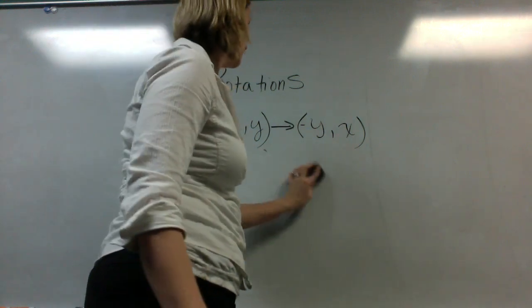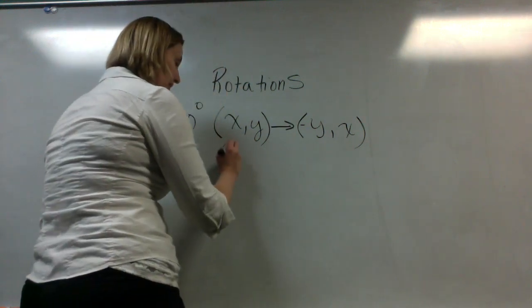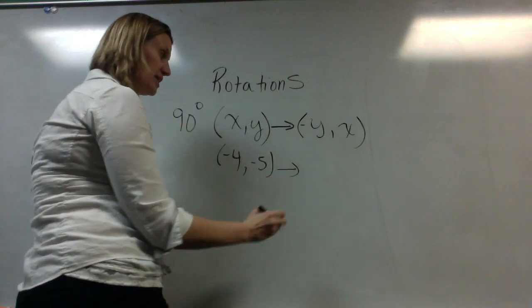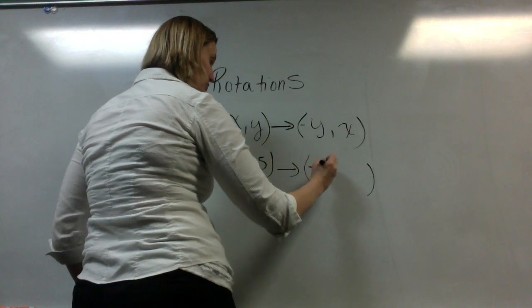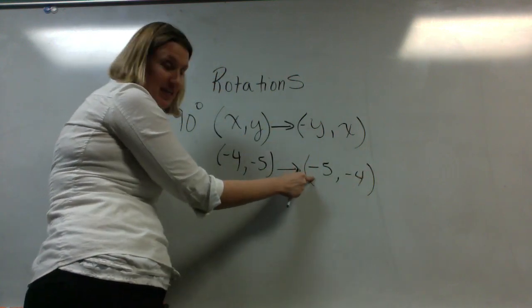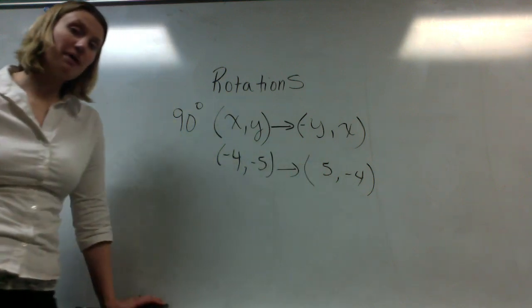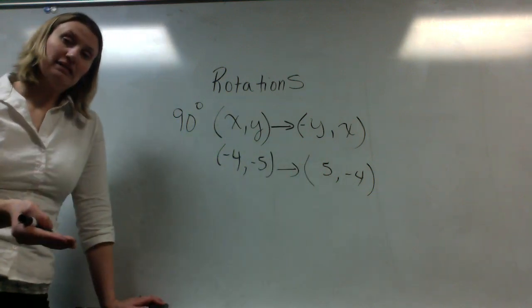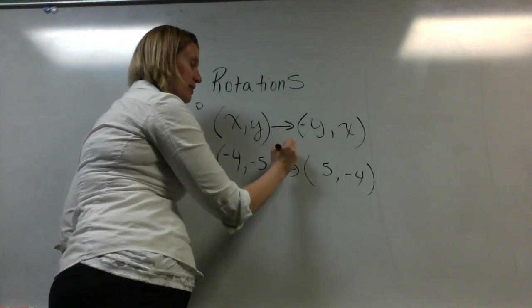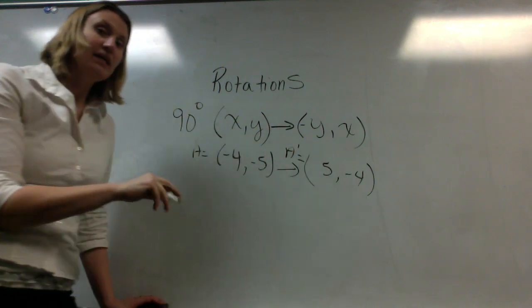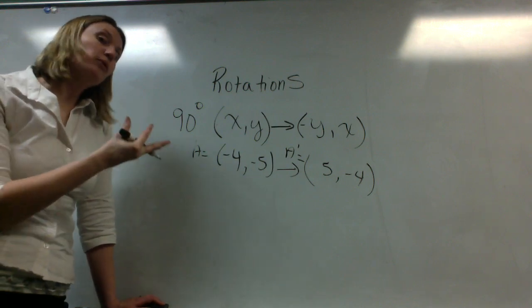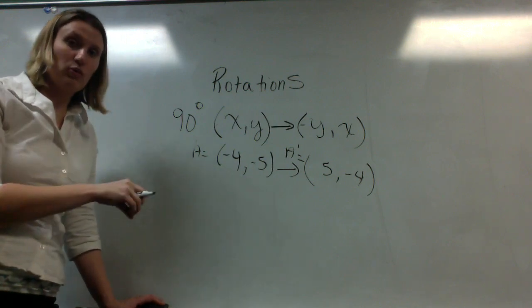If I had the coordinate point (-4, -5) and I wanted to rotate that 90 degrees, I would switch the coordinate points and do the opposite of y, which means I would take this negative and make it positive. That would be the rotation of this point — this would be A, and this would be A prime. It is easier for rotations to actually figure out what your coordinate point is going to be first, and then go through and plot them.